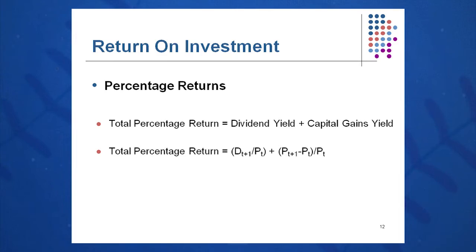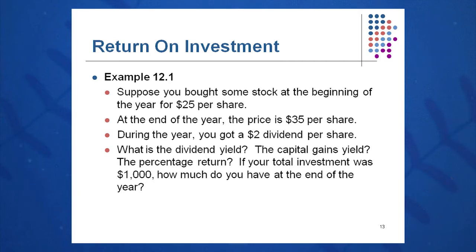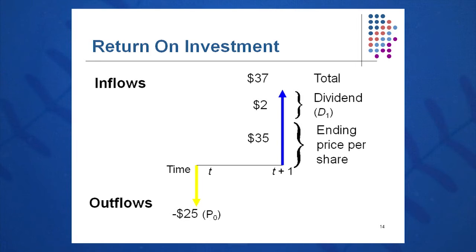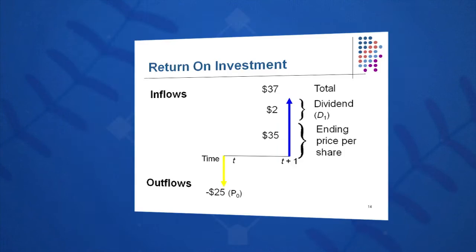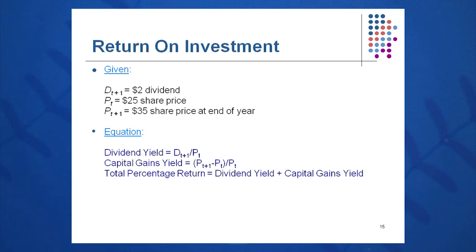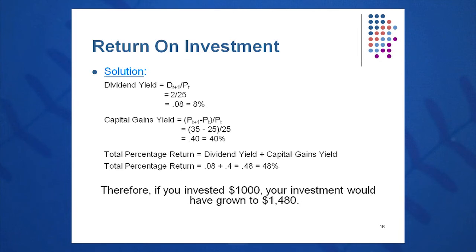Let's look at an example. Suppose you bought stock at the beginning of the year for $25 per share. The stock went up to $35 per share by end of year, and you received a $2 dividend per share. The dividend yield is $2 over $25, or 8%. The capital gains yield is $35 minus $25 over $25, or 40%. Total return is dividend yield plus capital gains yield: 48%.